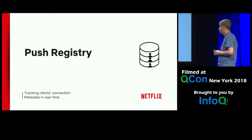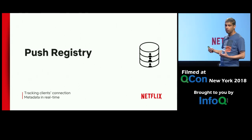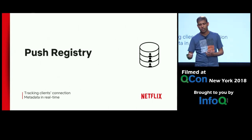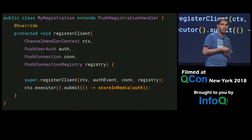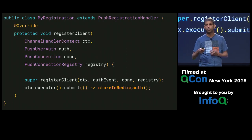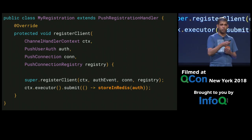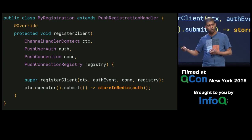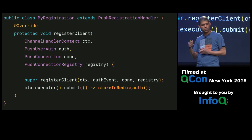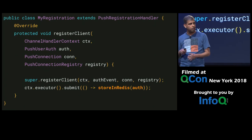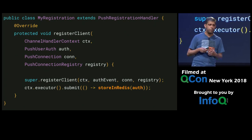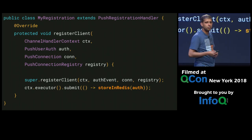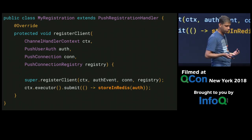Push registry is the component that keeps the mapping of a push client to the server to which it is connected. Just like custom authentication, we allow you to plug in your own custom push registration mechanism inside Zulpush. The way to do that is to extend our push registration handler class and override its register client method. The example here just stores that mapping inside a Redis. Storing in Redis would be the method you would implement to serialize that mapping into your push registry, whichever way you see fit.